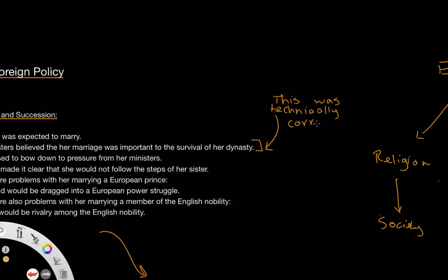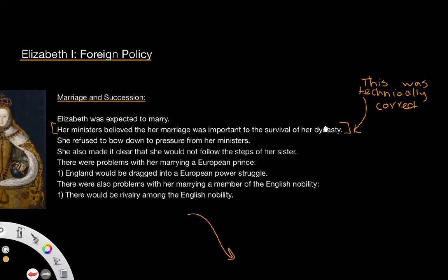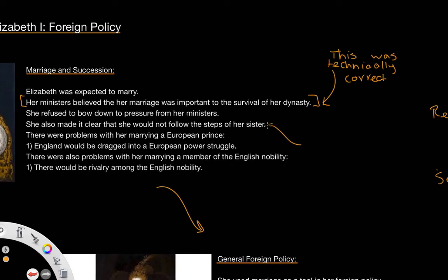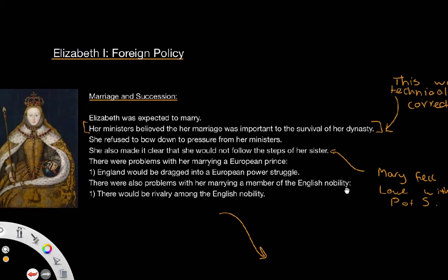Following the death of Elizabeth we find the end of the Tudor dynasty and the beginning of the Stuarts, so this concern was technically correct. However, Elizabeth refused to bow down to the pressure from her ministers — she wanted to make this decision herself. She also made clear she would not follow the steps of her sister Mary, who fell in love with Philip of Spain, which led to Mary making poor decisions with regard to foreign policy.